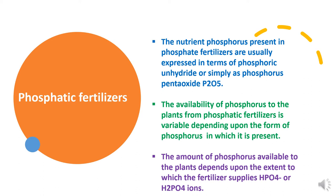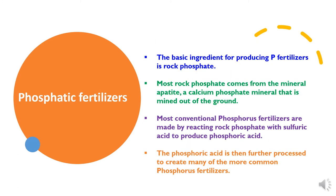Phosphatic fertilizers are the fertilizers which supply Phosphorus in the form of Phosphorus Pentoxide or P2O5. The availability depends on the form of Phosphorus available in the fertilizers, either in H2PO4 form. To produce Phosphatic fertilizers, Rock Phosphate is the basic ingredient. Most conventional Phosphorus fertilizers are made by reacting Rock Phosphate with Sulphuric Acid to produce Phosphoric Acid, which is then processed to make Phosphorus fertilizers.